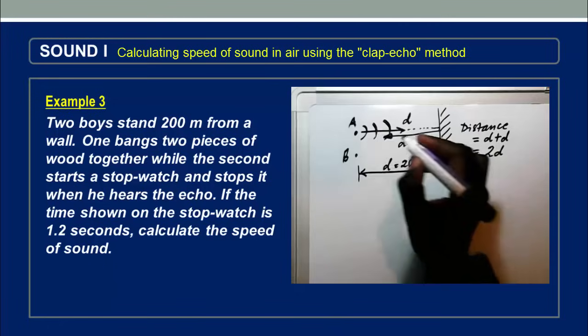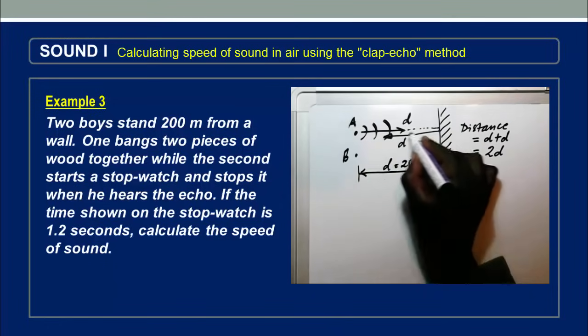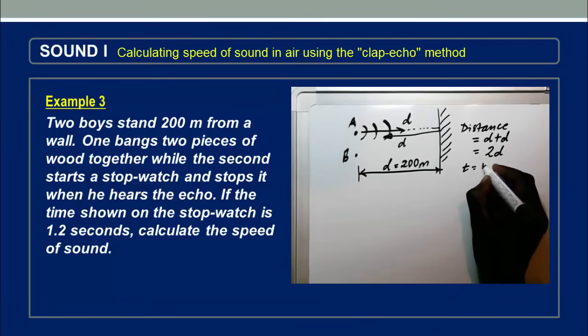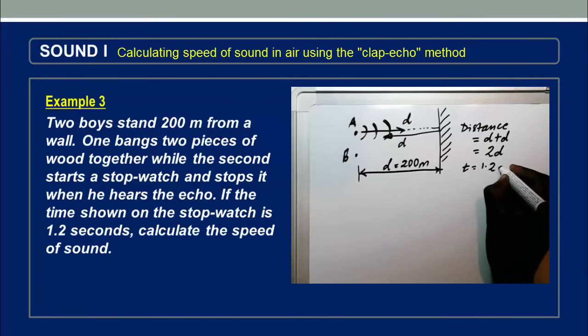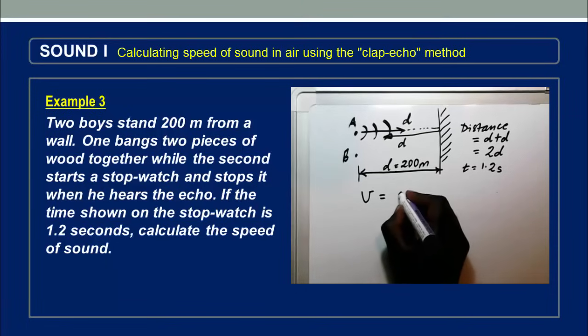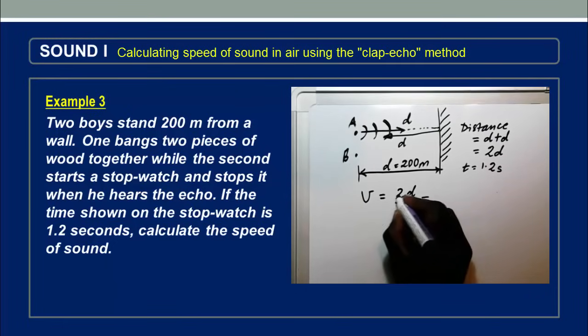Now the time taken by this sound to move from this point, hit the wall, and come back is what we are given as 1.2 seconds. And then we are required to calculate the speed of sound. So the speed of sound, V, is equal to the total distance covered which is D plus D, which is 2D, over the time taken to cover this distance, 2D.